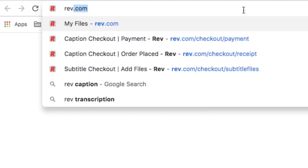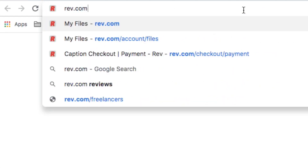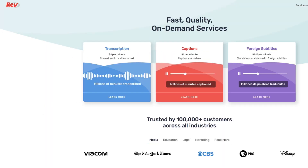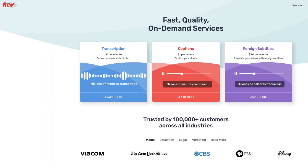You'll start by going to Rev.com — that's R-E-V. If you click the link below, I have a coupon where you can save $10 off your first order, so go ahead and click that link. In the future you'll just use Rev.com directly.